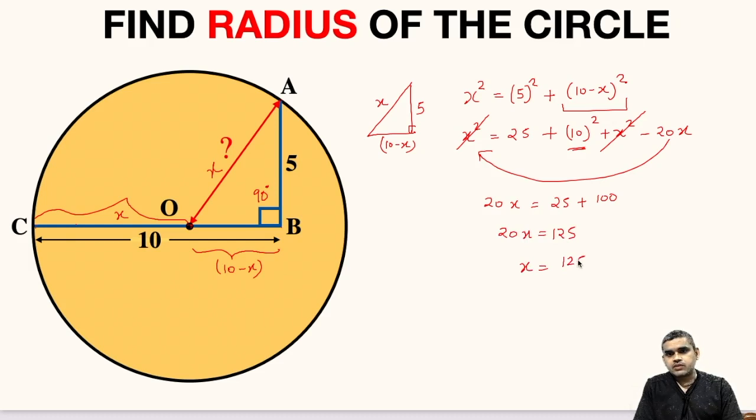So X will be equal to 125 upon 20. Let us divide it by 5, so 5 times 4 is 20, 5 times 2 is 10, 5 times 5 is 25. So X equals 25 upon 4.